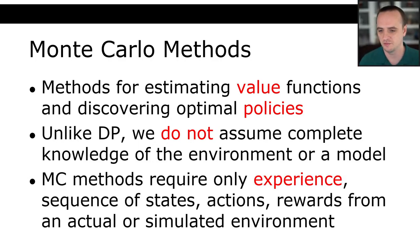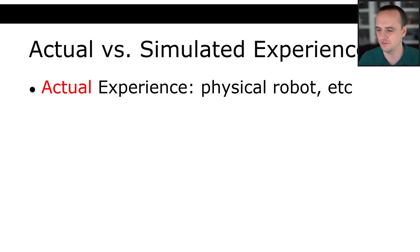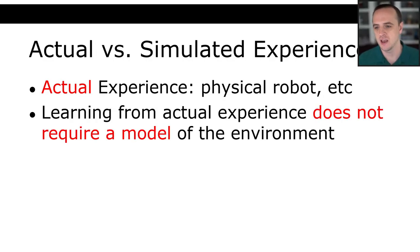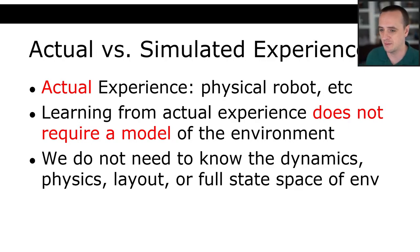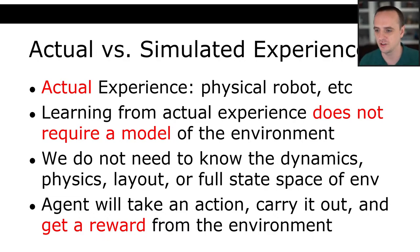Monte Carlo methods require only experience — meaning we have some sequence of states, actions, and rewards from either an actual environment or a simulated environment. Actual experience would be something like a physical robot driving around in the real world. Learning from actual experience does not require a model of the environment. We don't need to know the dynamics, the physics, the complete layout, or the full state space. An agent observes its state, takes an action, gets a reward, the state changes, and we update our value and policy.